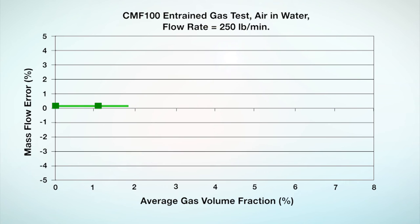This plot shows the performance of a Micromotion Elite Coriolis meter in a typical entrained gas application. The y-axis shows percent mass flow error, and the x-axis illustrates average gas volume fraction.